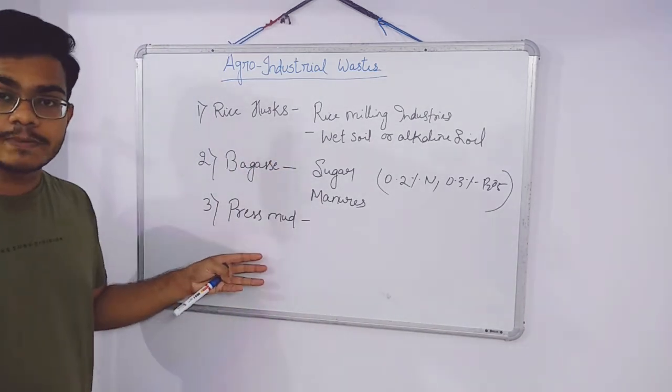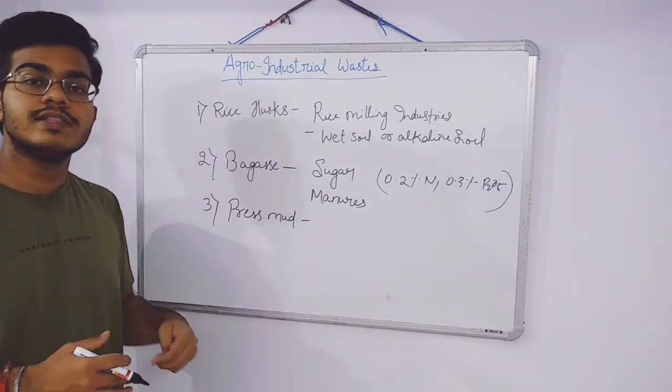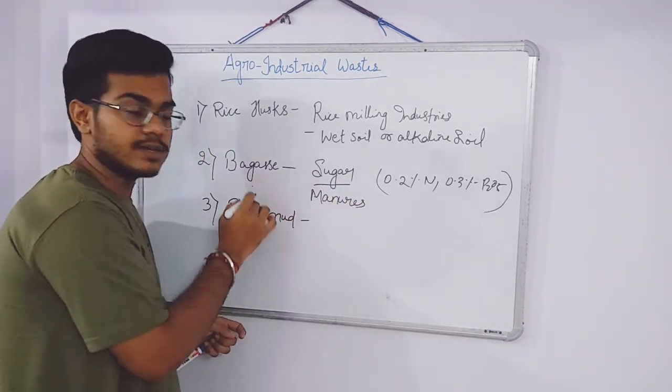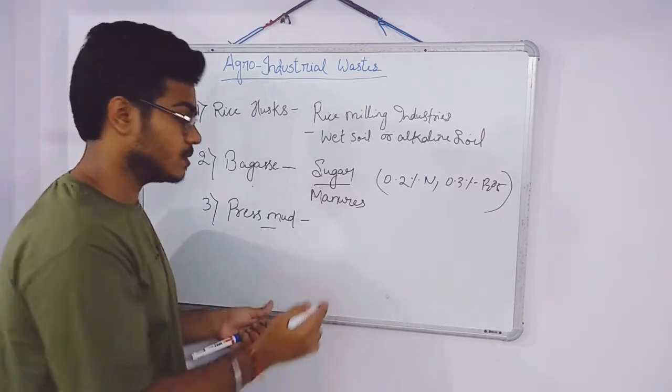Press mud is obtained from sugar manufacturing. This is the byproduct of sugar dollars and is obtained during the manufacturing process of sugar.